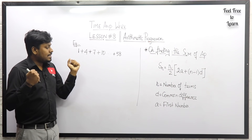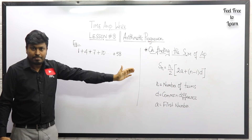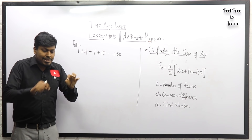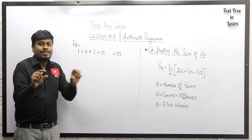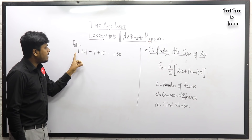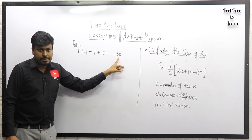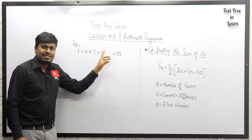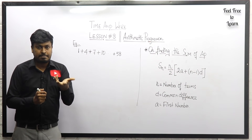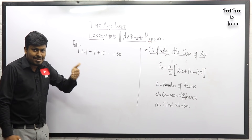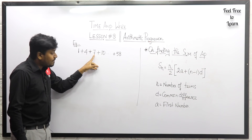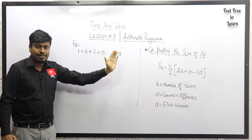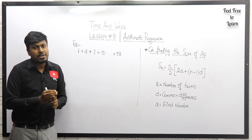First, let's learn what arithmetic progression is and then apply it to a basic example. An arithmetic progression is a number series where we need to find the total sum. For example: 1 + 4 + 7 + 10, going on till 58. The difference between each term is 3. To find the total sum traditionally, we'd add each number one by one — which is very lengthy, especially when going up to 58.